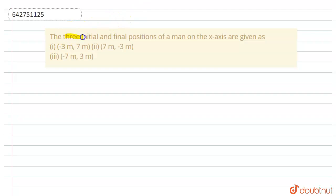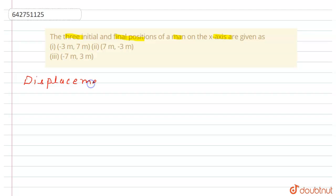The three initial and final positions of a man on the x-axis are given. In this question, we have to find the displacement. Displacement is equal to final position minus initial position.